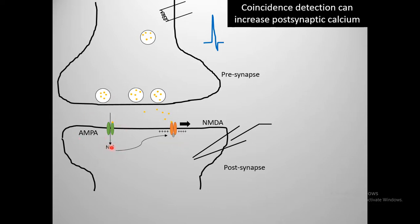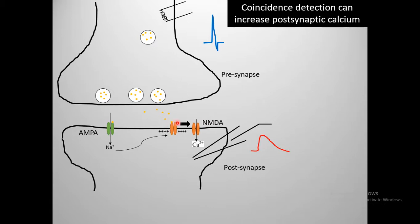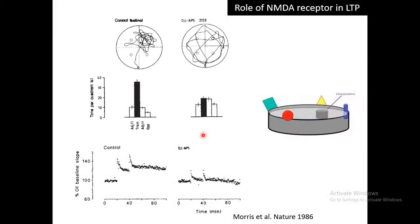AMPA receptors conduct sodium, which makes the post-synaptic membrane more depolarized, repelling the magnesium block out of the NMDA receptor. Then the NMDA receptor can conduct and allow calcium influx. What the NMDA receptor does is convey the message of coincidence — it tells the synapse that the pre-synapse and post-synapse are simultaneously active. Pre-synaptic activity is conveyed by glutamate binding to the NMDA receptor, and post-synaptic activity is conveyed by repulsion of the magnesium block. Pre- and post-synaptic activity are coupled at the molecular level through the NMDA receptor.